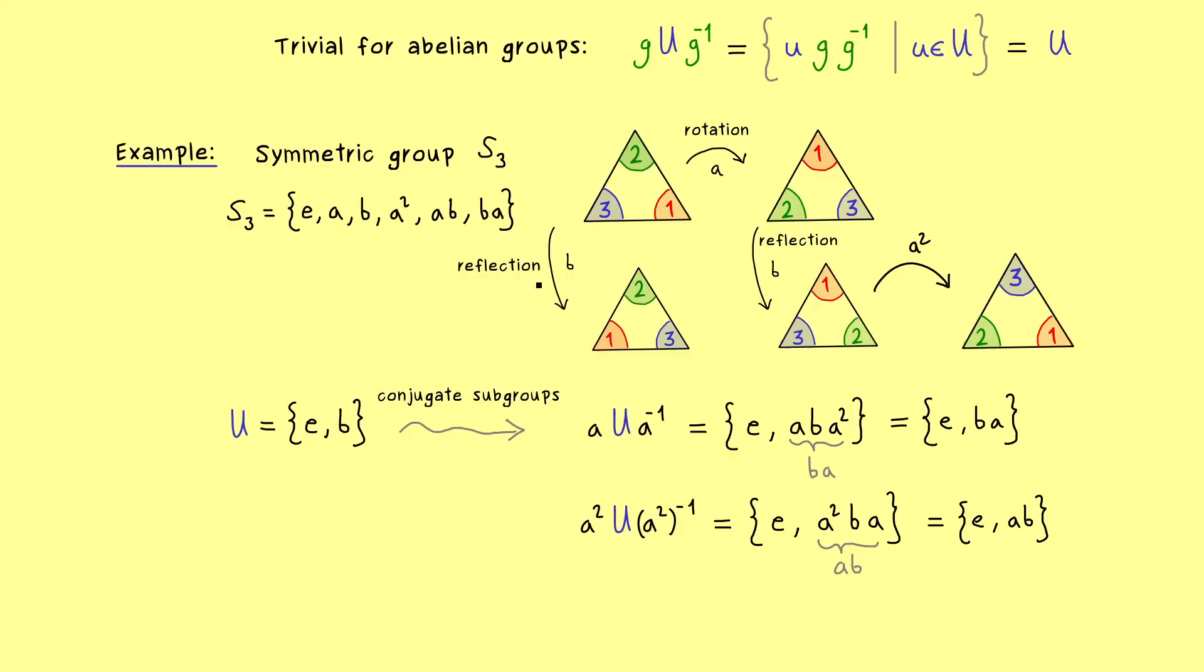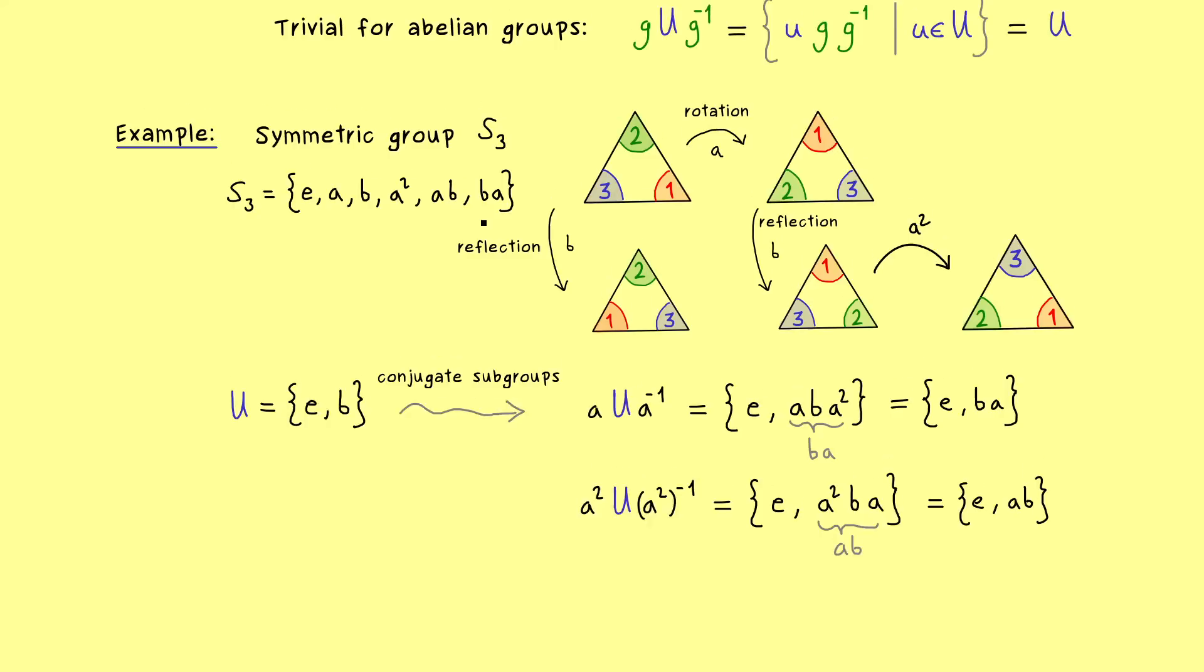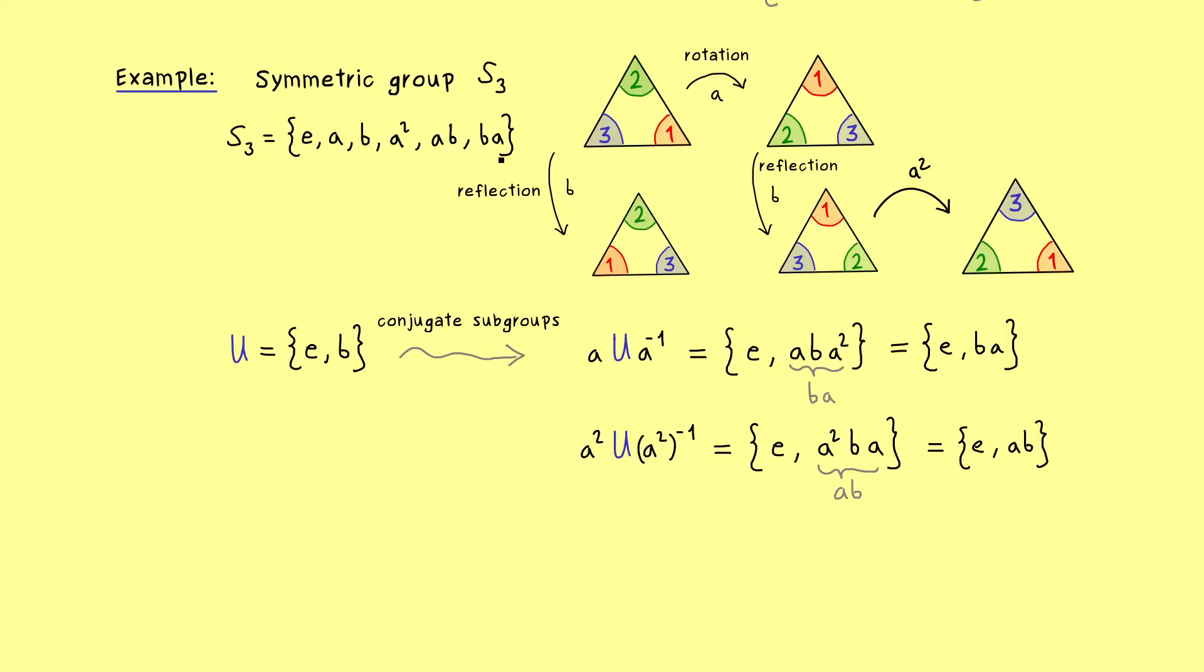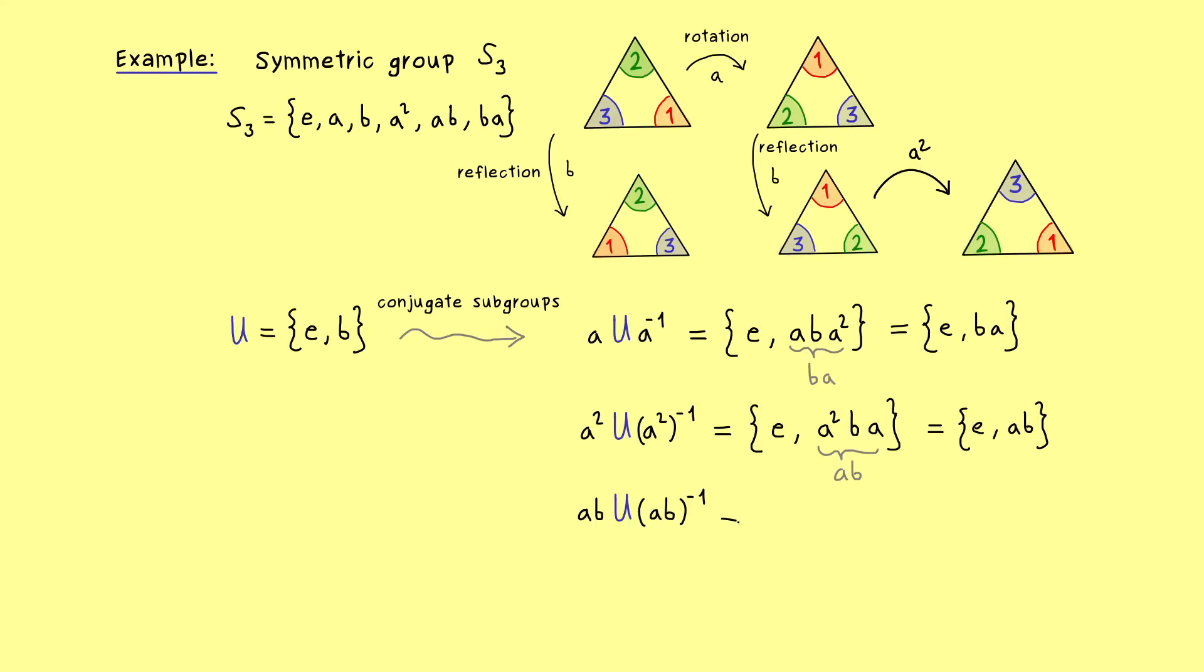Okay, and now you see we have two elements left. And for these we can also write down the conjugate subgroup. So first let's use our element ab. This means in our set we find ab times b and then ab inverse. However, now it's not hard to check that ab is self inverse. So the inverse of ab is ab again.